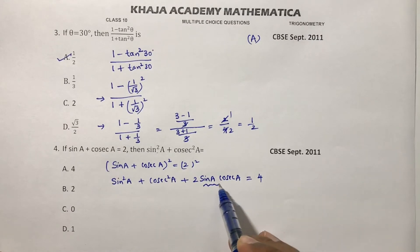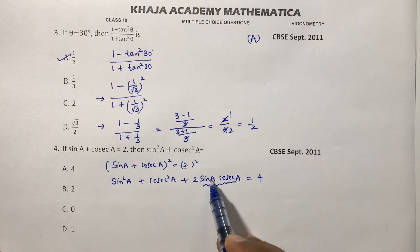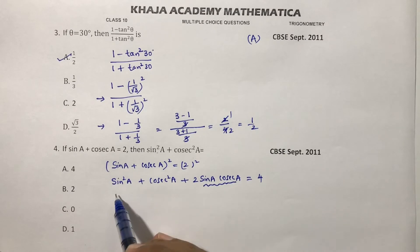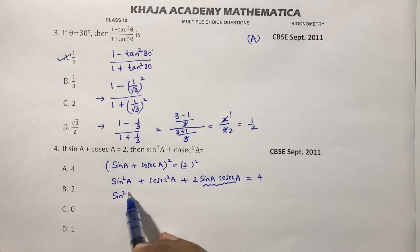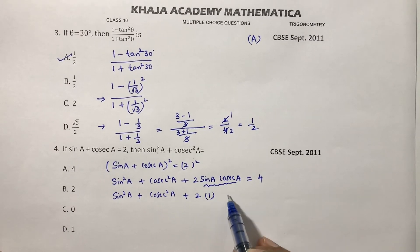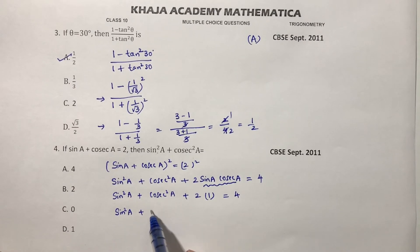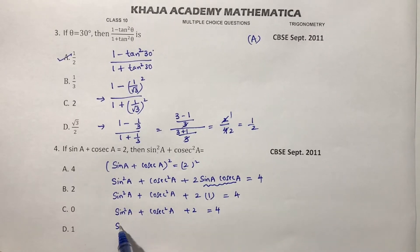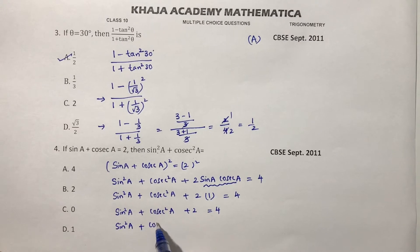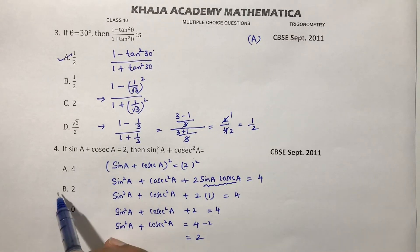Sin A and cosec A are reciprocals — sin A is opposite by hypotenuse and cosec is hypotenuse by opposite — so sin A times cosec A equals 1. Therefore sin squared A plus cosec squared A plus 2 equals 4, so sin squared A plus cosec squared A equals 2. The correct option is B.